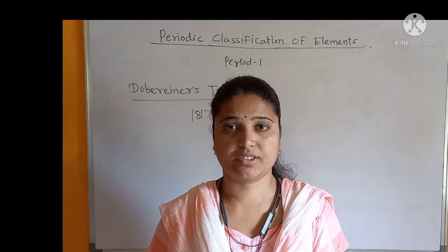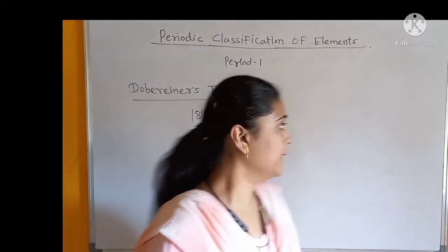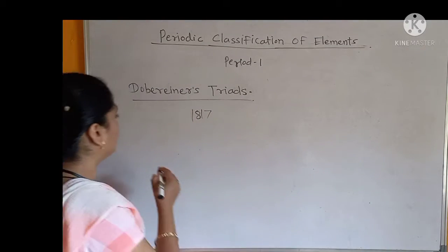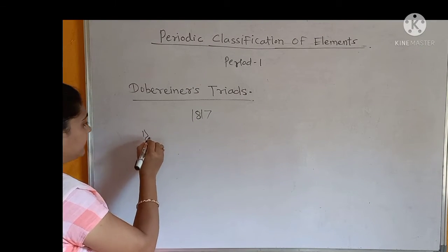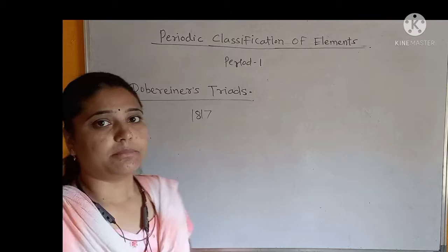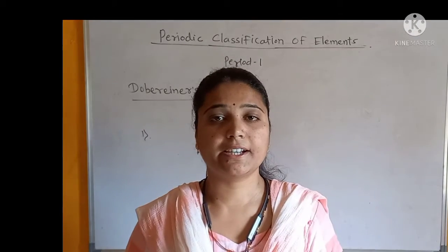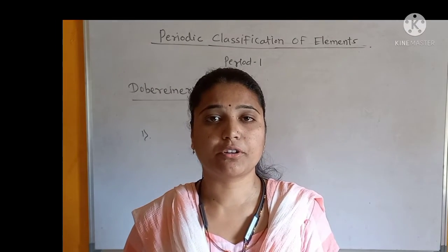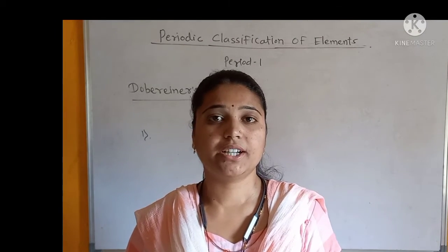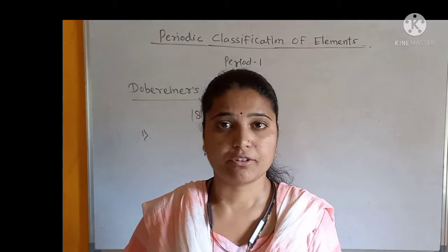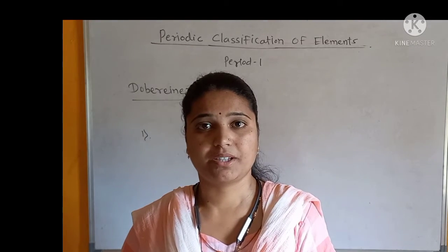Dobereiner gave some postulates related to elements. The first postulate given by Dobereiner's Triads is that the property of an element is directly related to its atomic mass number. We know about atomic number and atomic mass number from our study of atoms.